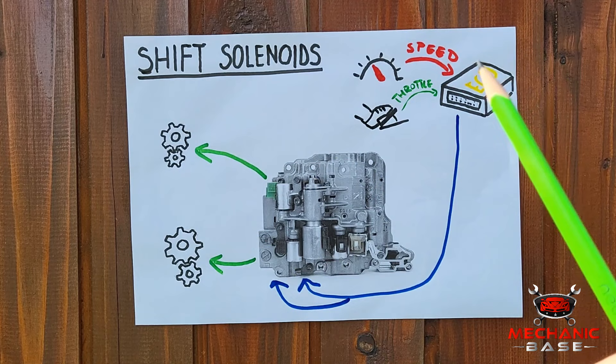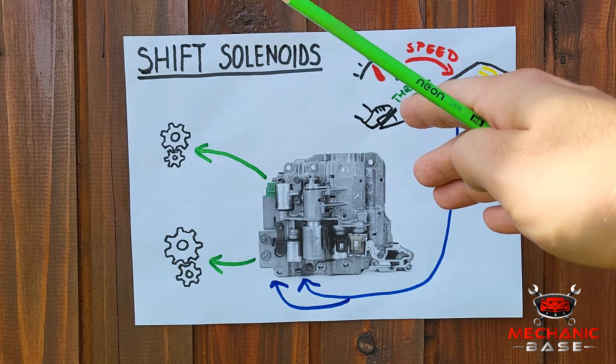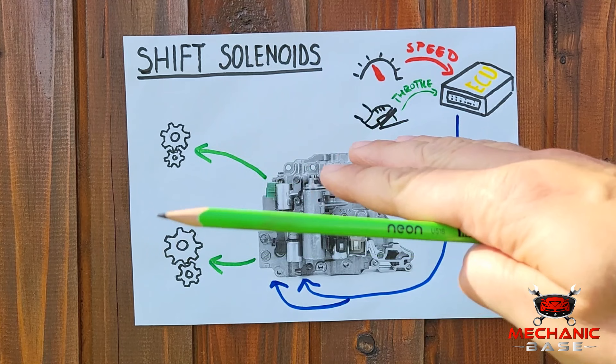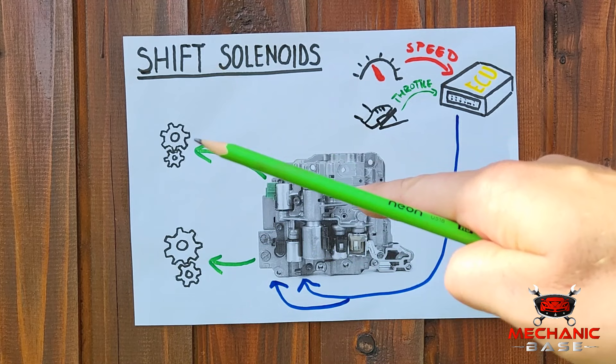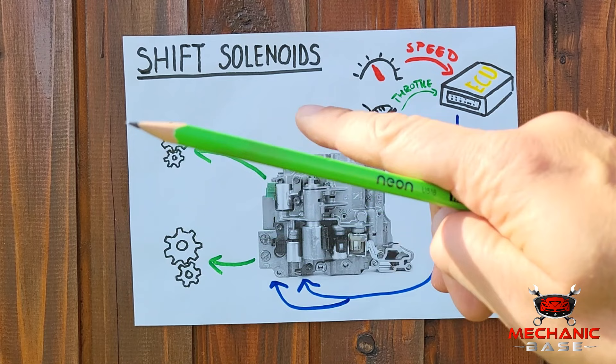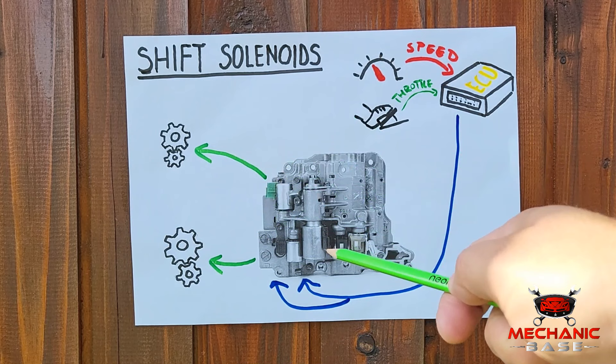If the shift solenoids aren't working properly, gear changes will be anything but ideal. This would be similar to driving a car with a manual transmission whose gear lever is loose and not properly engaged. So if you're experiencing harsh or unusual gear shifts, chances are you're having a failing or bad shift solenoid. But before jumping to any conclusions, let's first check the common symptoms.